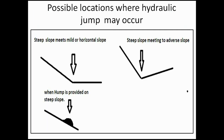Regarding location — where hydraulic jump can occur: the first case is whenever a steep slope meets a mild slope or horizontal slope. The second case is whenever a steep slope meets an adverse slope, which is an increasing slope with respect to length. At those meeting points, hydraulic jump is possible.